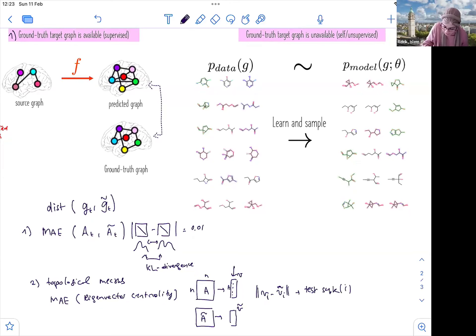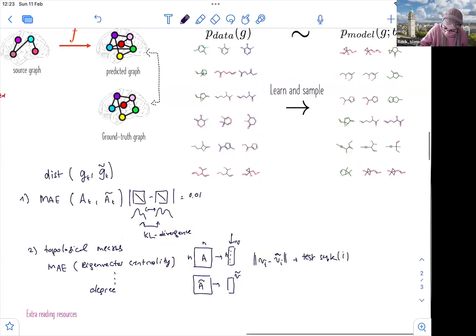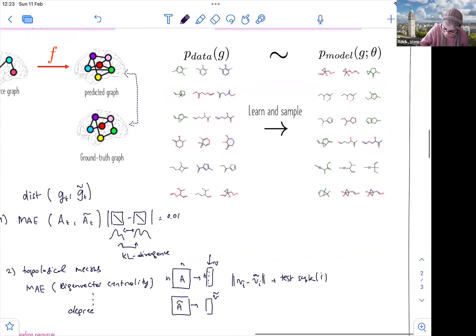So you can do this also for many other centrality measures, such as degree or strength. So you can use these. And when you plot your, when you have your plots, you can say, well, now my method, this is the performance of my method.